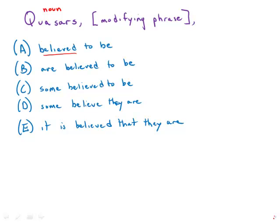So we get quasars, then a modifying phrase, then this other modifying phrase beginning with believed to be, and we get all the way to the end of the sentence and we're still waiting for a verb.